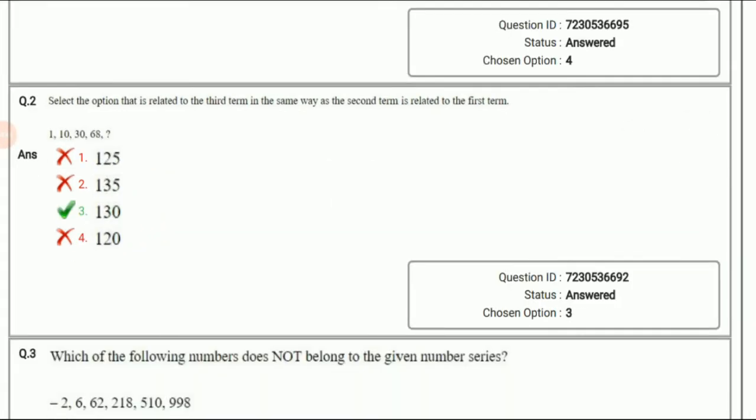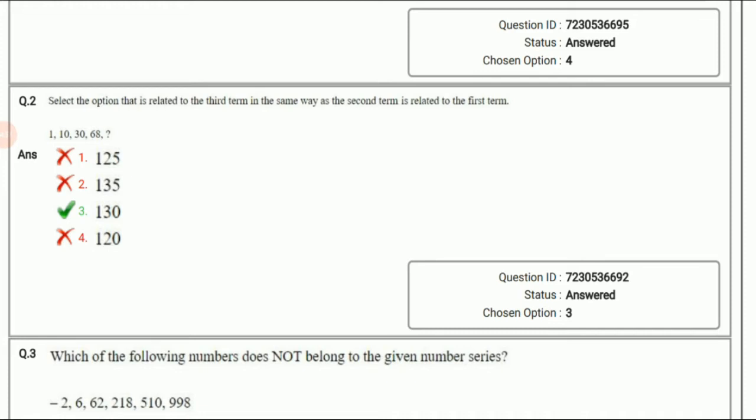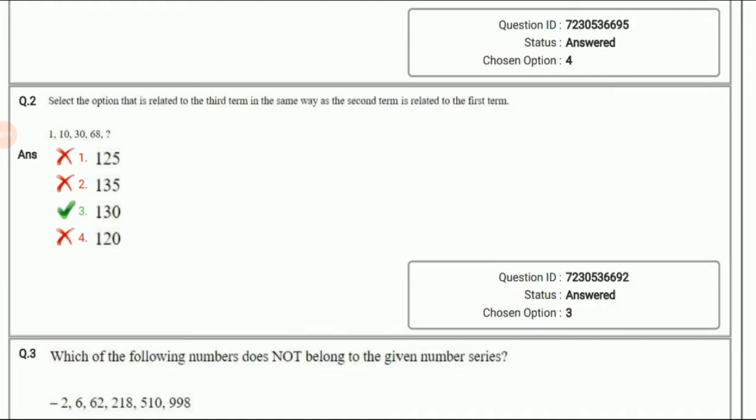Next question. The question is printed wrong. We have to complete the sequence. The series is 1, 10, 30, 68, and then question mark. If we analyze the series we can have this pattern: 0×0×0+1=1, 2×2×2+2=10, 3×3×3+3=30, 4×4×4+4=68. So now we can have 5×5×5+5=130. The answer is option 3, 130.